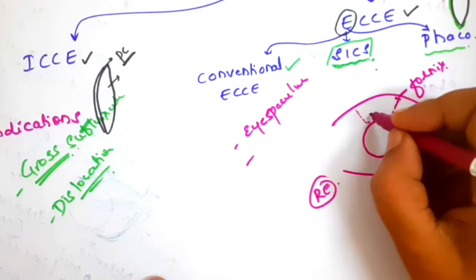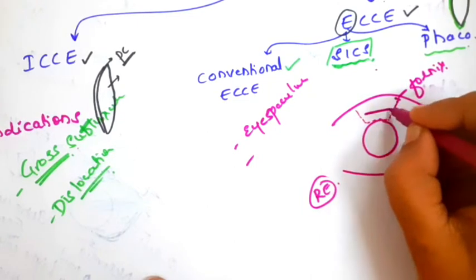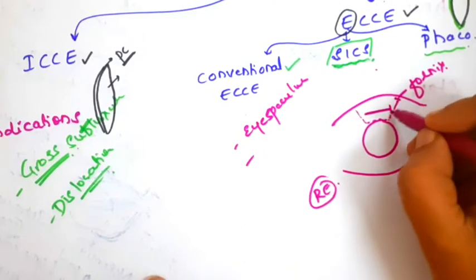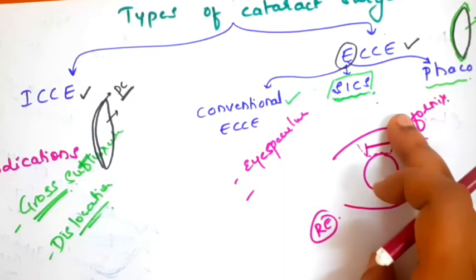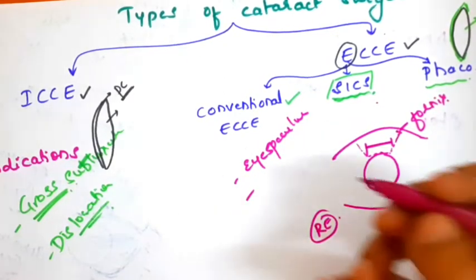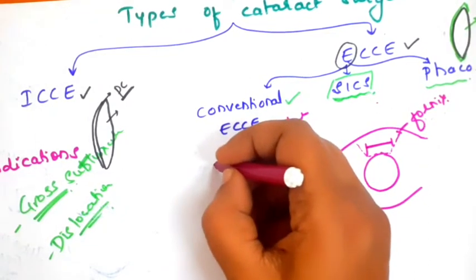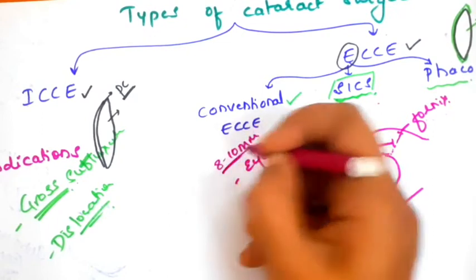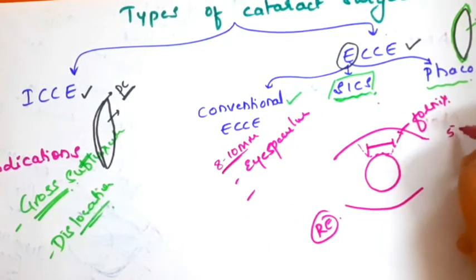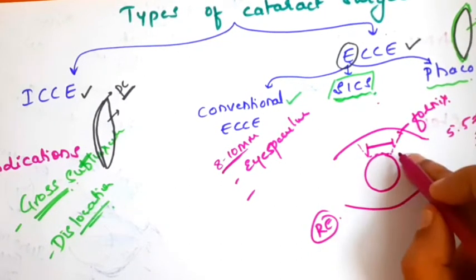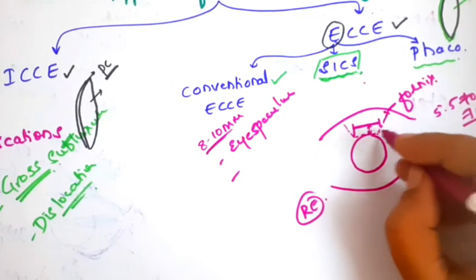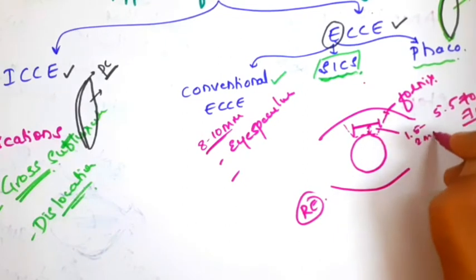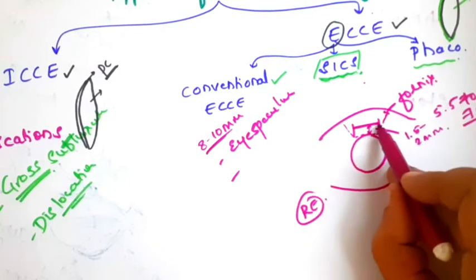After doing the conjunctival flap, an incision is placed over the sclera. The size of the incision differs between conventional ECCE and small incision cataract surgery. In conventional ECCE it is around 8 to 10mm, whereas in small incision cataract surgery it is 5.5 to 7mm of partial thickness scleral incision, placed 1.5 to 2mm away from the limbus.